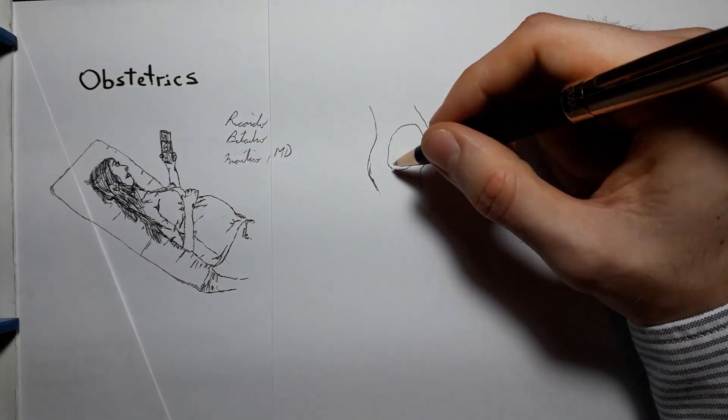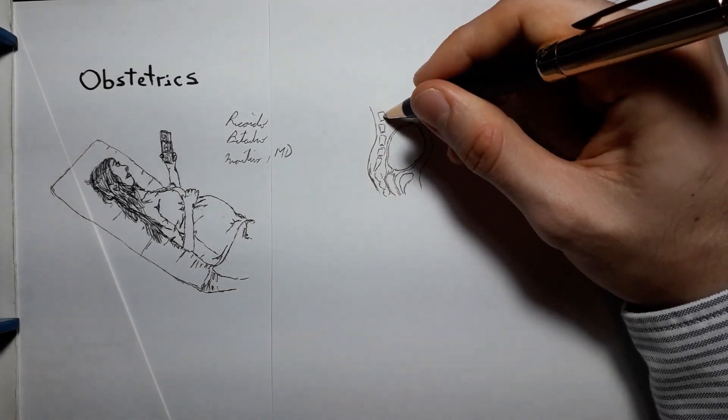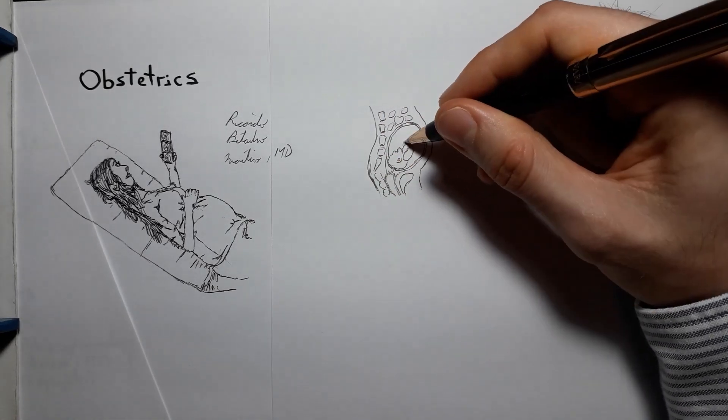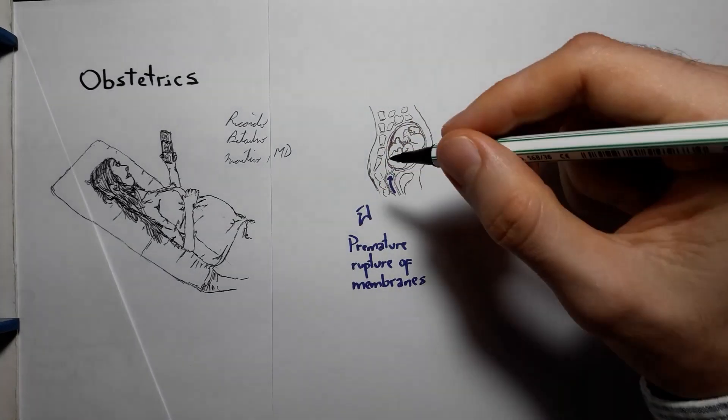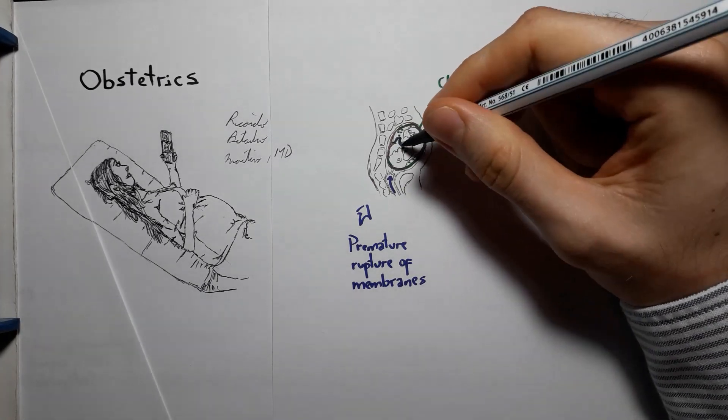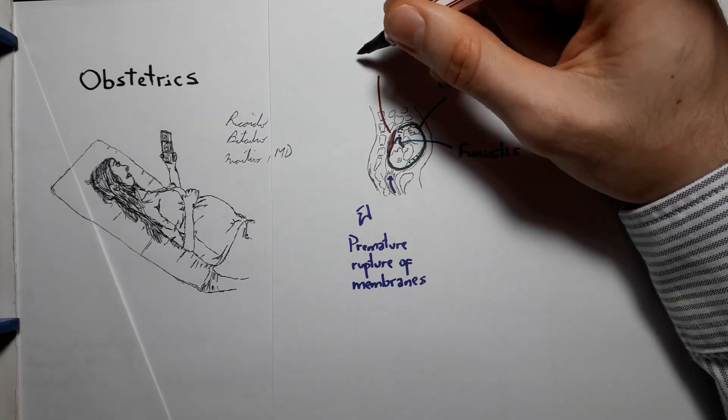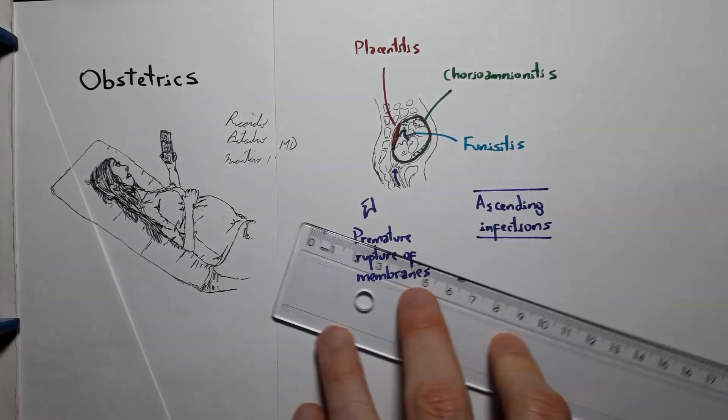There is also the possibility of placental infection by ascending vaginal pathogens. The most important risk factor is the premature rupture of membranes, which regularly causes chorioamnionitis, also possibly involving the umbilical cord and the placenta, called placentitis.